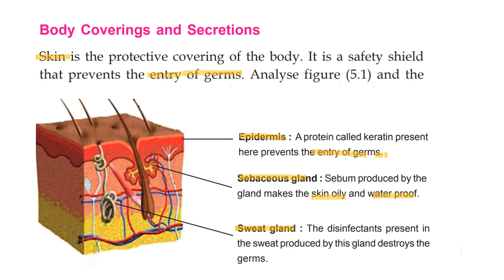The disinfectants present in the sweat produced by sweat glands destroy the germs. That is why the germs are destroyed by this gland. The skin is the main part of the body's first line of defense.